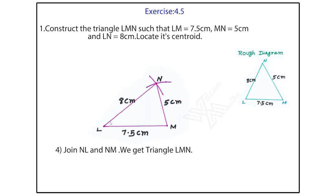Fourth step. Join NL and NM. What shape we are getting? We get a triangle. What is the name of the triangle? LMN.